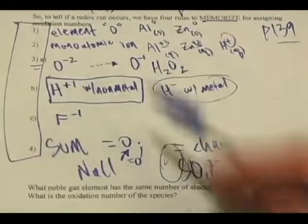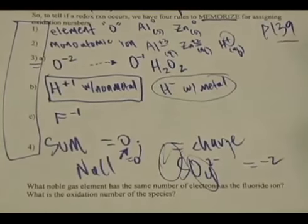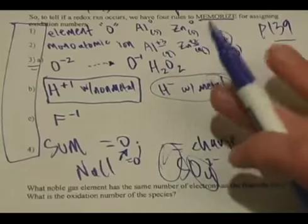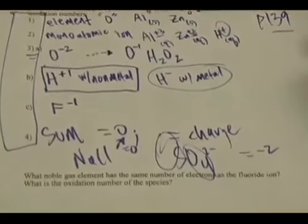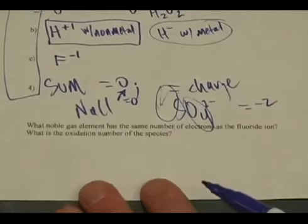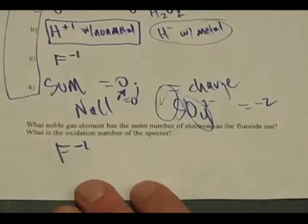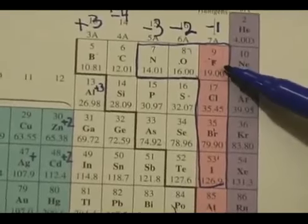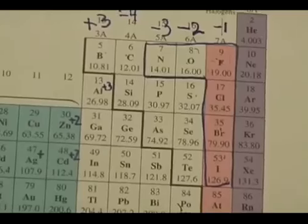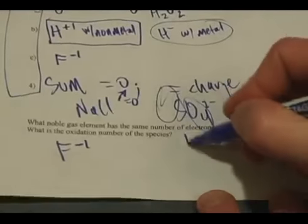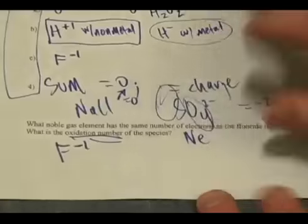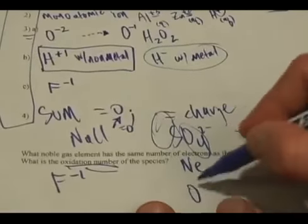Those are the four rules for assigning oxidation numbers. A first sample question: what noble gas element has the same number of electrons as fluoride ion? Fluoride is F⁻¹. If fluoride had one more electron — because a minus one charge means it gained one more electron — it would look like neon. So neon is the answer. And what's the oxidation number of neon as an element by itself? It has an oxidation number of zero.